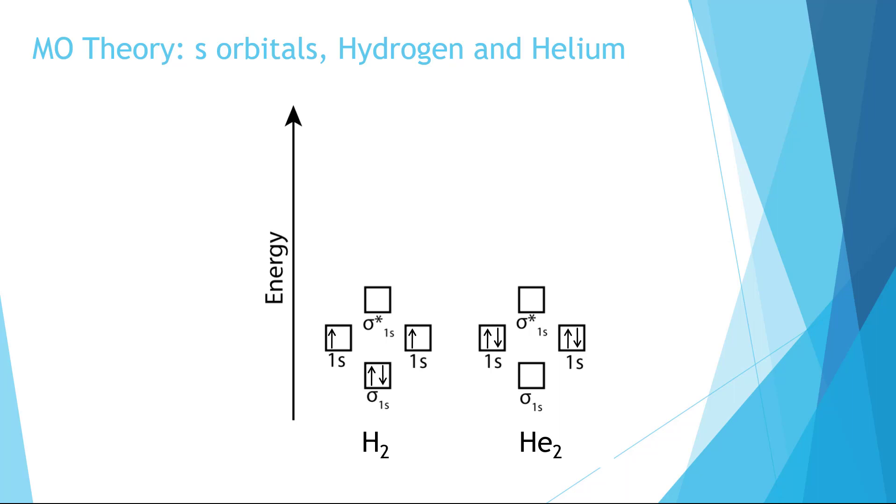We can do the same thing for helium. Since each atom has two electrons, there is a total of four electrons. Since each orbital only holds two electrons, we put two in the bonding orbital and two in the anti-bonding orbital.